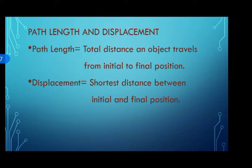Path length is also sometimes known as distance. It is the total distance an object travels from initial to final position — that means the entire distance which you are covering. That is why it is also known as path length: the entire path through which you are reaching your destination from your initial position.